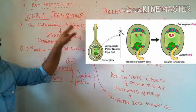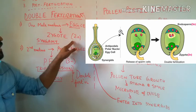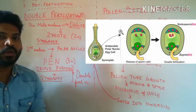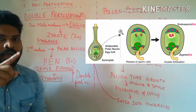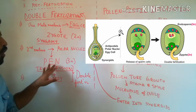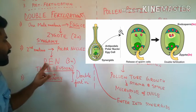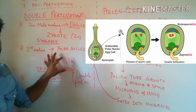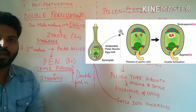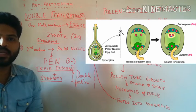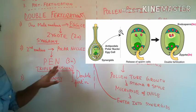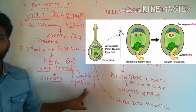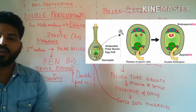The male nucleus is haploid and the egg cell is haploid; together their fusion results in a diploid zygote. The second male nucleus will migrate and fuse with the two polar nuclei present in the central cell. This results in the formation of a triploid primary endosperm nucleus. Since three nuclei are involved in this fusion, it is called triple fusion. Inside the embryo sac, there are two fusion events: one is syngamy and one is triple fusion. Because there are two separate fertilization events taking place in the embryo sac, this phenomenon is called double fertilization.